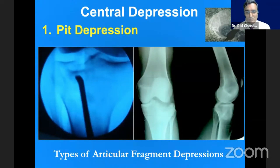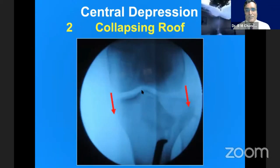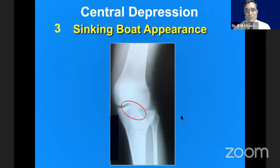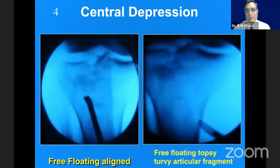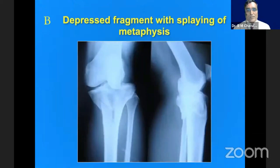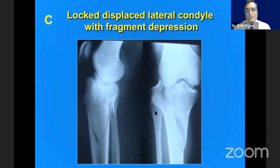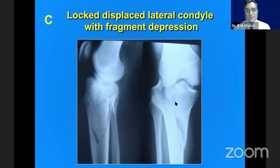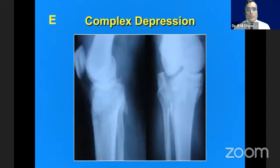These are the various patterns which we find, and these are the various images — like a collapsing roof. You will find various patterns occurring in the articular surfaces of these complex articular surface depressions. Many times we have a complex depression. Our aim is to get the articular surface back into position.